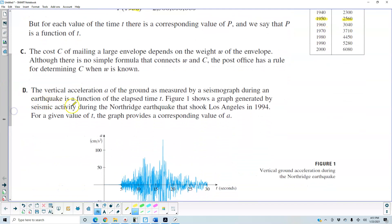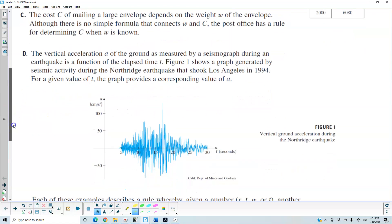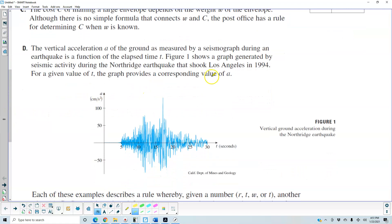Part D: The vertical acceleration a of the ground as measured by a seismograph during an earthquake is a function of the elapsed time t. Figure 1 shows a graph generated by the seismic activity during the Northridge earthquake that shook Los Angeles in 1994. For a given value of t the graph provides a corresponding value of a. So the value of t is in seconds, the vertical is centimeters per second squared. So the vertical ground acceleration during the Northridge earthquake.